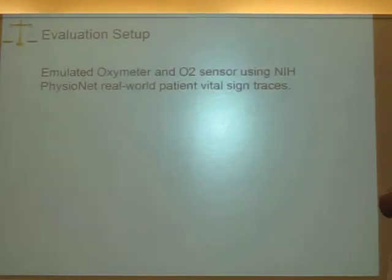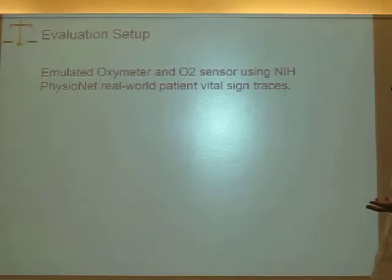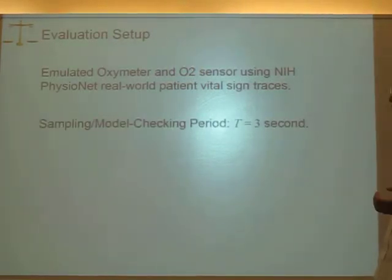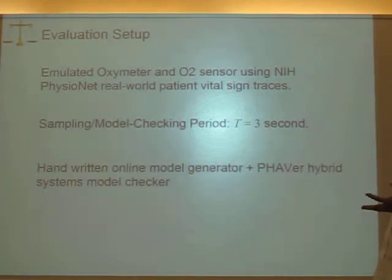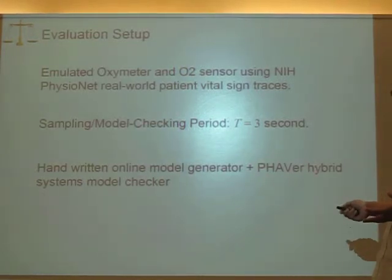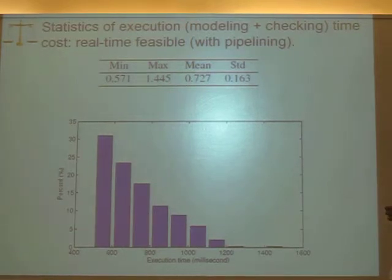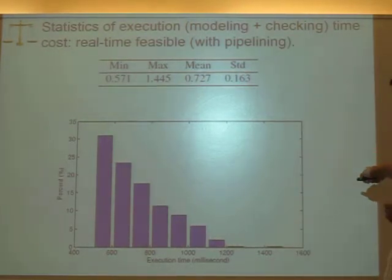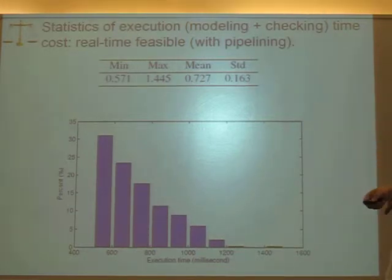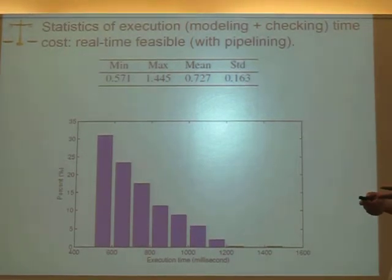Evaluation. We emulated the oximeter and oxygen sensor using NIH PhysioNet real-world patient vital sign traces. The sampling and online model checking period is three seconds. We use a handwritten online model generator combined with a well-known hybrid system model checker called FAVOR. The computational environment is a very mediocre laptop environment. We find that the modeling and verification time cost is always within 1.5 seconds. Remember, the online model checking period is 3 seconds, so with simple pipelining, we're confident that the model checking can be carried out online and within real time.